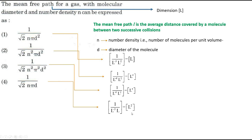So out of the four dimensions we got here, corresponding to the options, this one is having the same dimension as the mean free path. So this has to be the correct answer. In this, option 1 is the correct one.